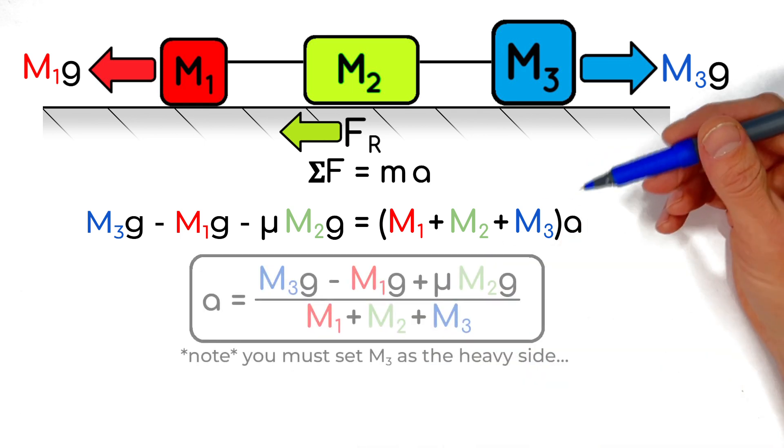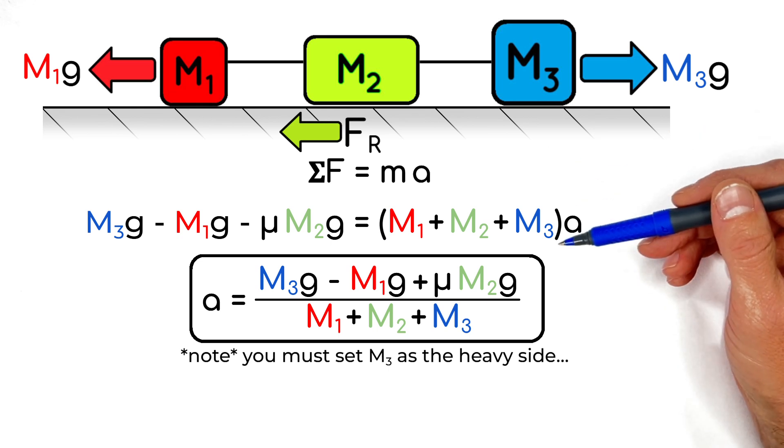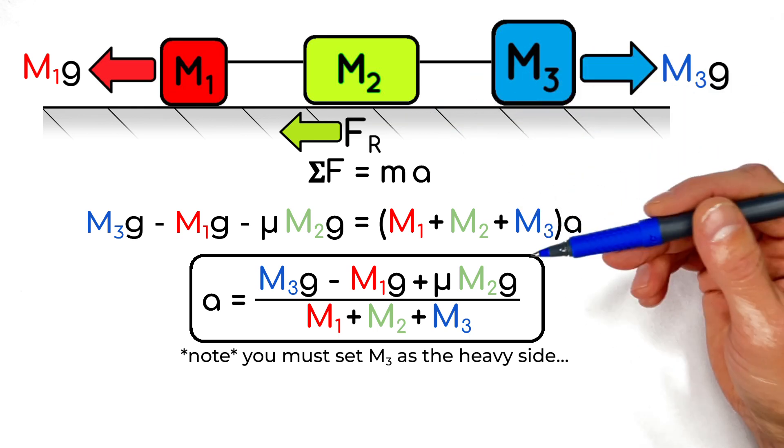So rearranging this for A, we get an equation that's going to tell us the acceleration of the system as a function of the masses and friction within the system.